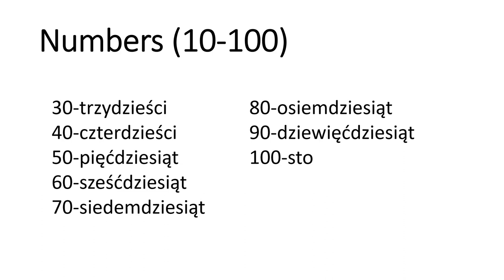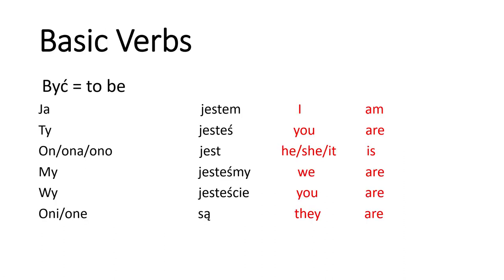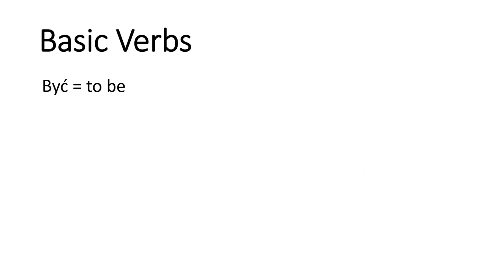Let's go to verbs in the past tense. Last time we talked about the basic verb 'być' (to be) in the present tense — today I'm going to talk about the past tense. Generally, we always take the ending of the verb, for example '-ć', and replace it with '-łem' for male gender and '-łam' for female gender.